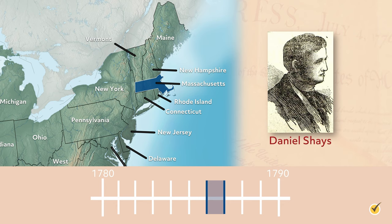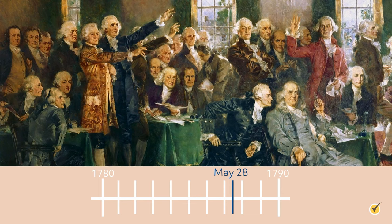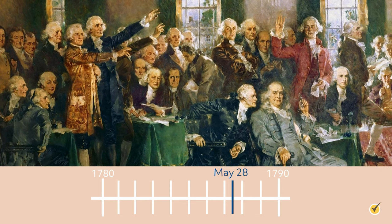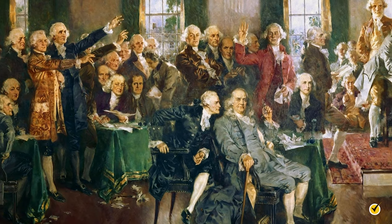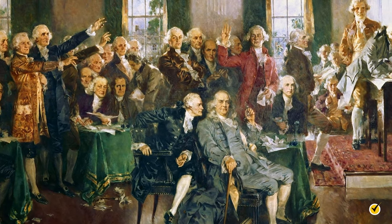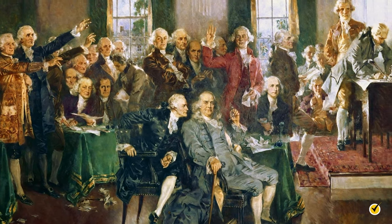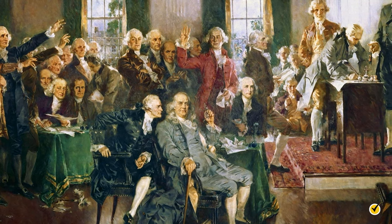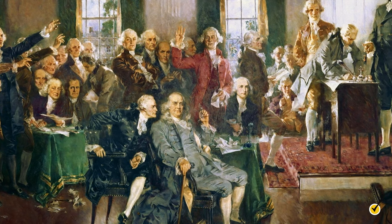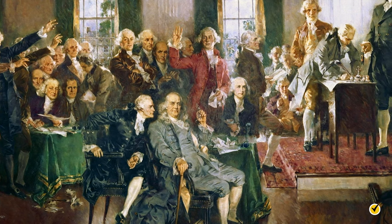Delegates from every state except Rhode Island agreed to meet in Philadelphia to revise the Articles of Confederation in May 1787. On May 28th, the convention agreed to keep proceedings secret and to allow delegates to reconsider any issue previously raised. This would allow delegates to carefully consider measures at the cost of making swift progress. At the beginning of the convention, it wasn't actually clear how far the discussions were to go — would the delegates simply revise certain parts of the Articles or throw them out completely?